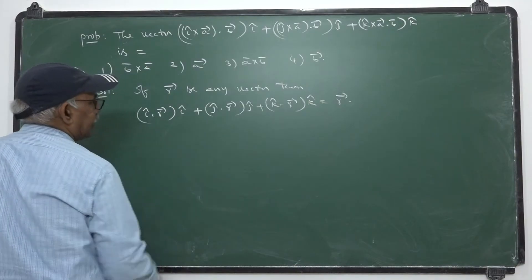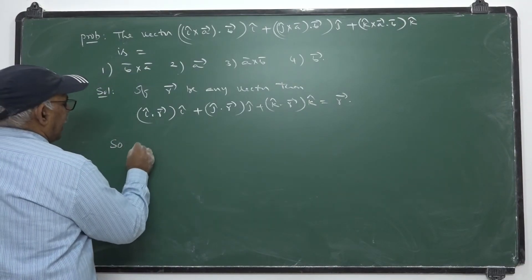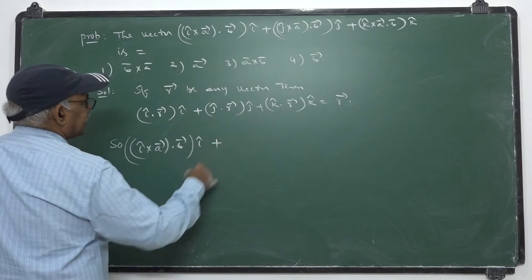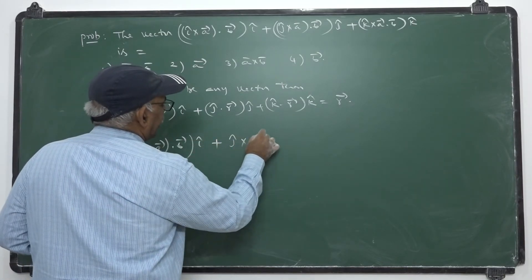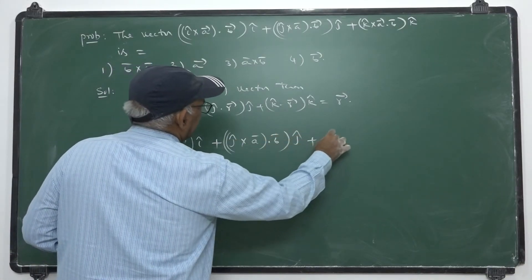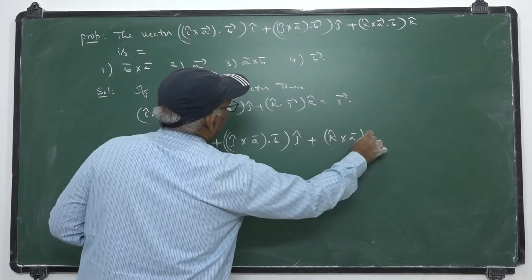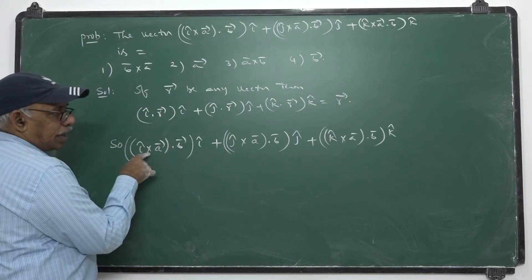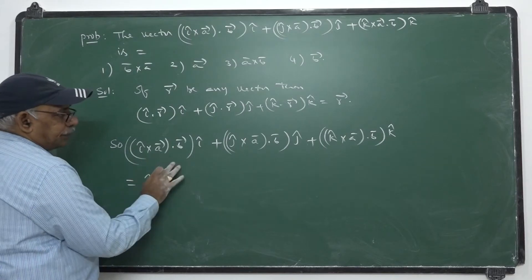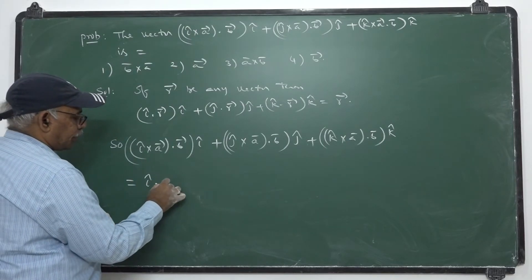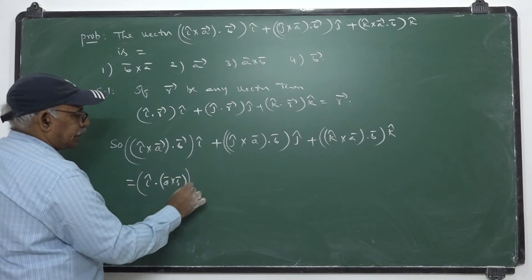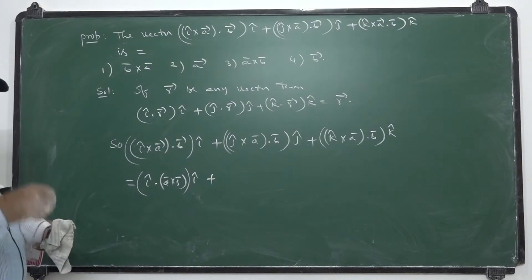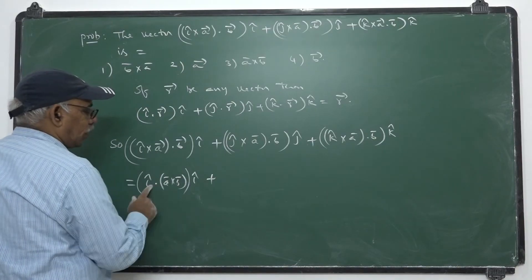So (ī × ā)·b̄·ī + (j̄ × ā)·b̄·j̄ + (k̄ × ā)·b̄·k̄ may be rewritten by interchanging the positions of dot and cross. In a scalar triple product, if dot and cross are involved, you can interchange their positions without changing the order of the vectors.